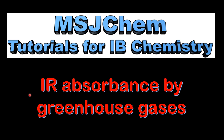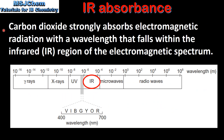This is MSJ Chem. In this video I'll be looking at infrared absorbance by greenhouse gases. Carbon dioxide strongly absorbs electromagnetic radiation with a wavelength that falls within the infrared region of the electromagnetic spectrum. Here we have the electromagnetic spectrum, and you can see that infrared lies between microwaves and visible light.